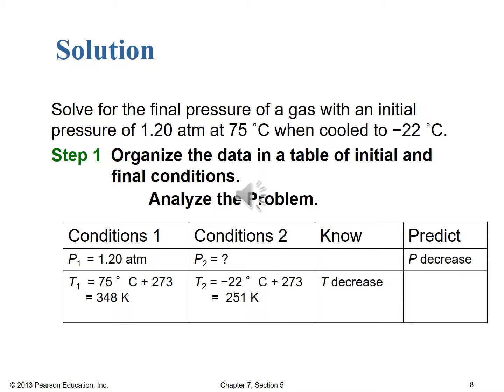Hopefully you went through the steps. Step one: organize the data. P1 = 1.20 atm; T1 = 75°C converts to 348 K; P2 is what we're solving for; T2 = −22°C converts to positive 251 K. We see a temperature decrease, and therefore we predict a pressure decrease due to the direct relationship from Gay-Lussac's Law.